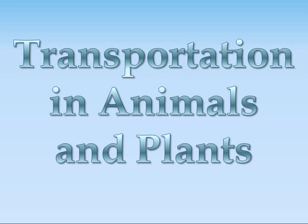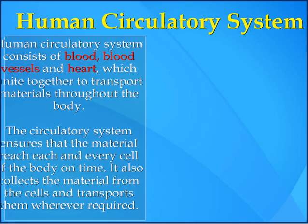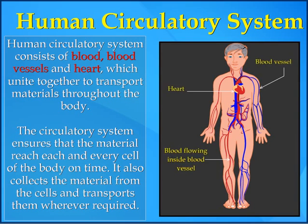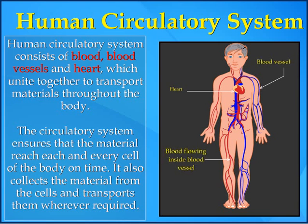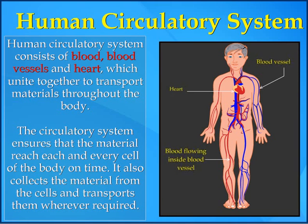Transportations in animals and plants. Human circulatory system. The human circulatory system consists of blood, blood vessels, and heart, which unite together to transport materials throughout the body. The circulatory system ensures that materials reach each and every cell of the body on time. It also collects materials from the cells and transports them wherever required.